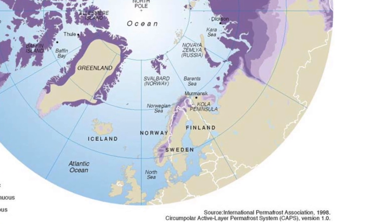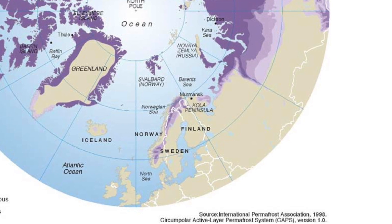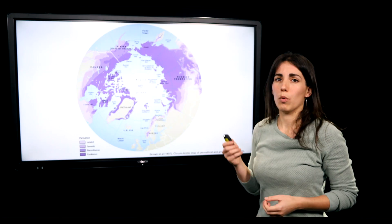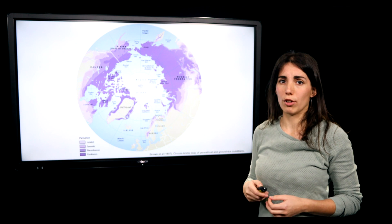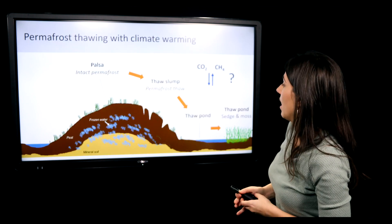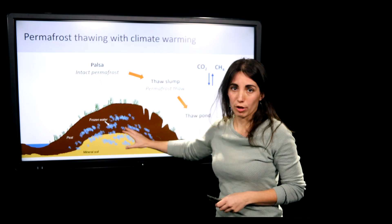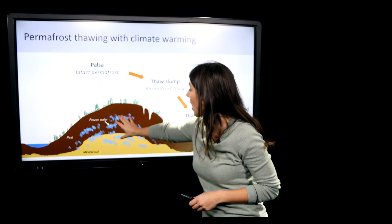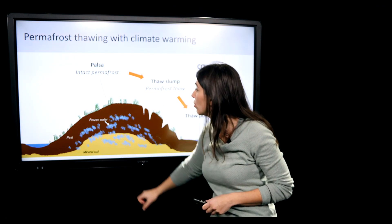And that prevents releases from carbon. So what happens when permafrost thaws? We have here a picture of permafrost that is intact, where the soil is frozen.